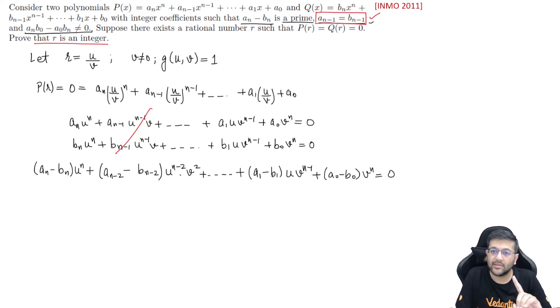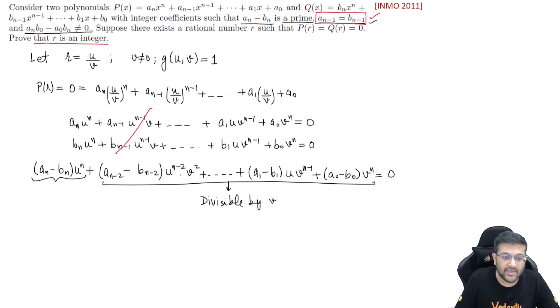After subtraction: (a_n - b_n) u^n + (a_{n-2} - b_{n-2}) u^{n-2} v^2 + ... + (a_1 - b_1) u v^{n-1} + (a_0 - b_0) v^n = 0. All these underlined terms are divisible by v. This term, that term, each contains v so this portion is divisible by v. Since the right hand side is also divisible by v and equals 0, the remaining term (a_n - b_n) u^n must also be divisible by v.